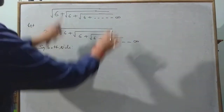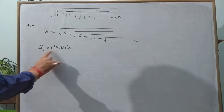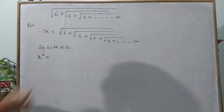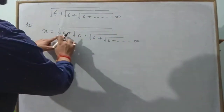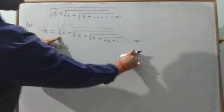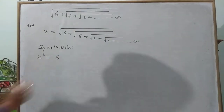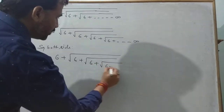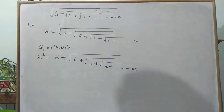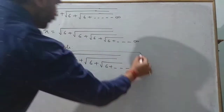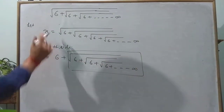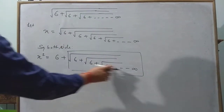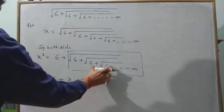Whenever x is equal to something in the form of a square root, first we do squaring both sides. This is important. So squaring both sides, it becomes x squared. When we put the square, the first square root is removed, giving 6 plus √(6 + √6...) till infinity. Now we notice this again — in place of this we can write x again.